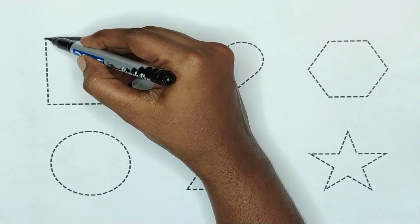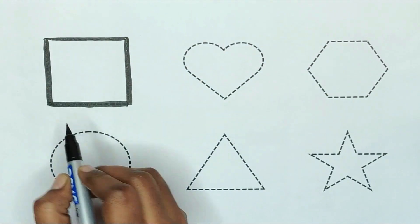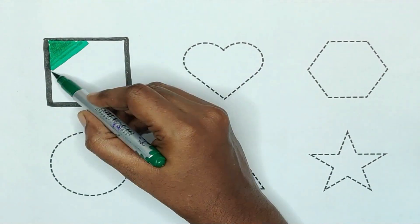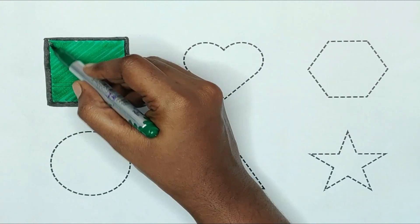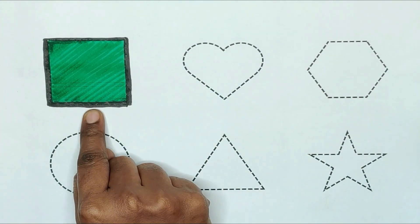First, square. The shape is square. Green color. The square is green color.